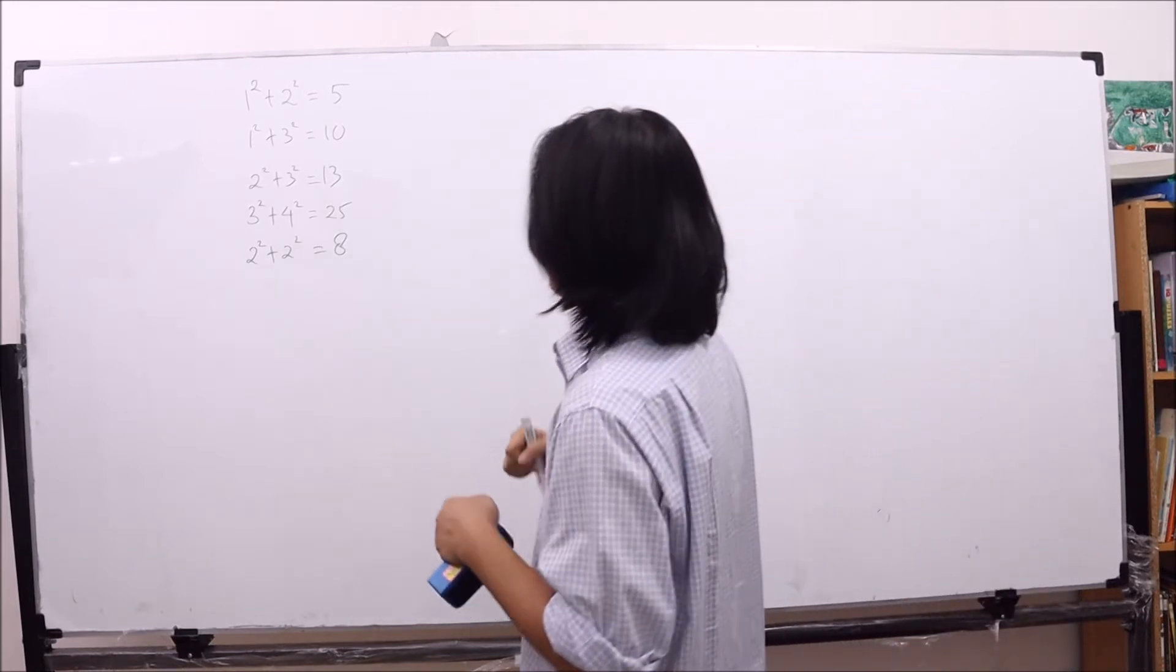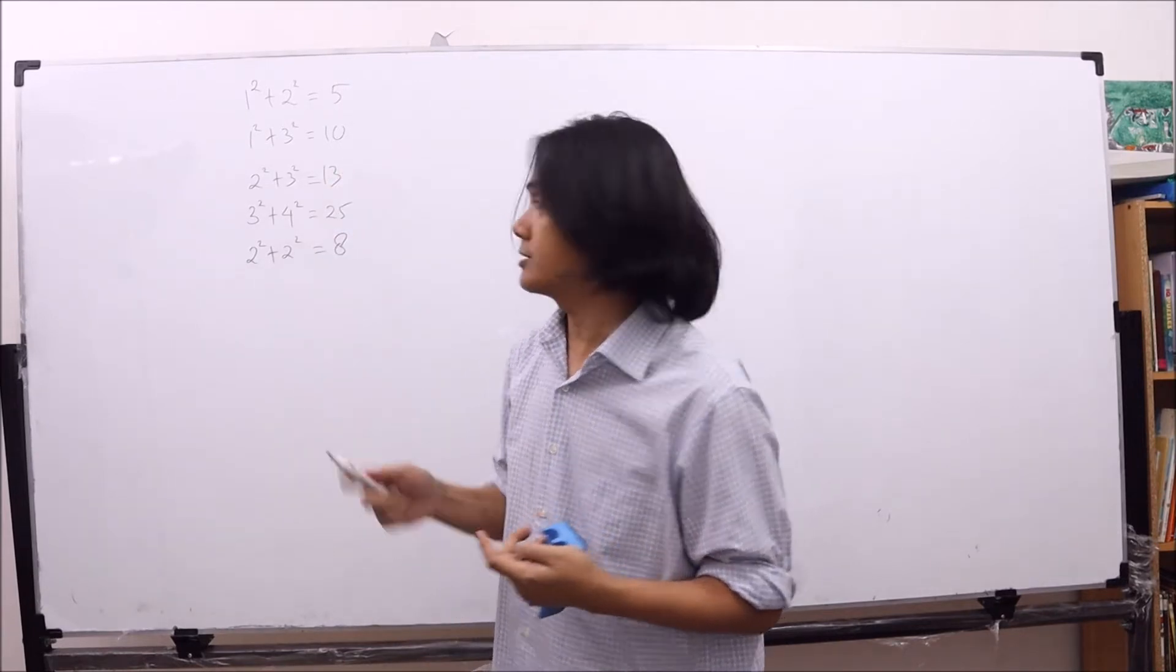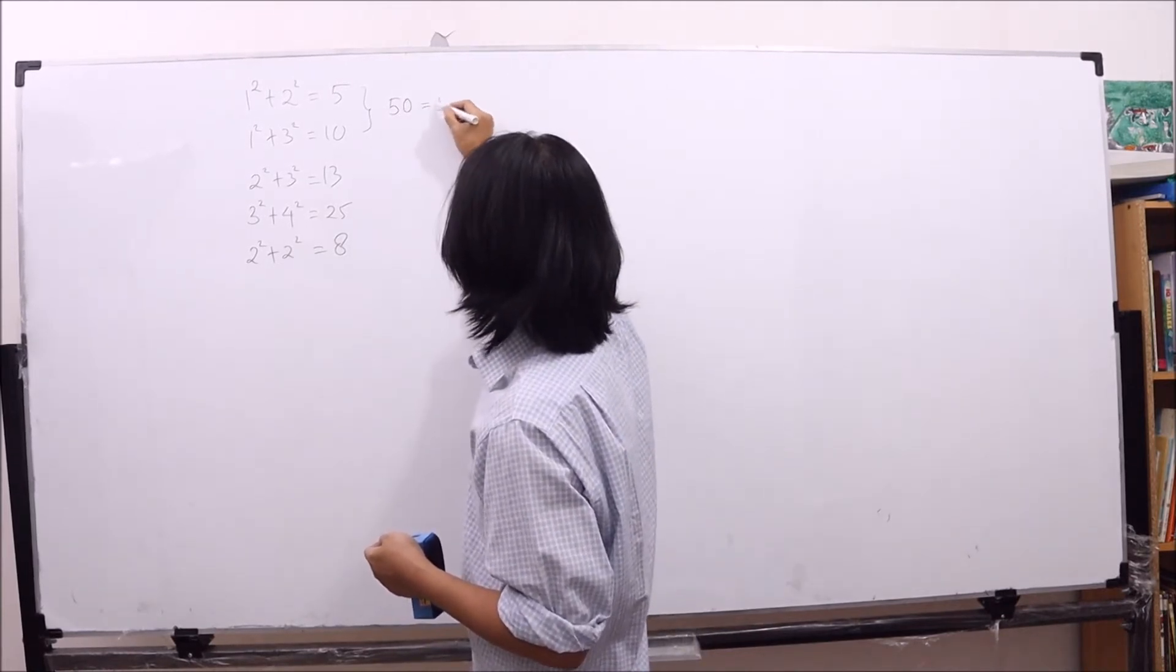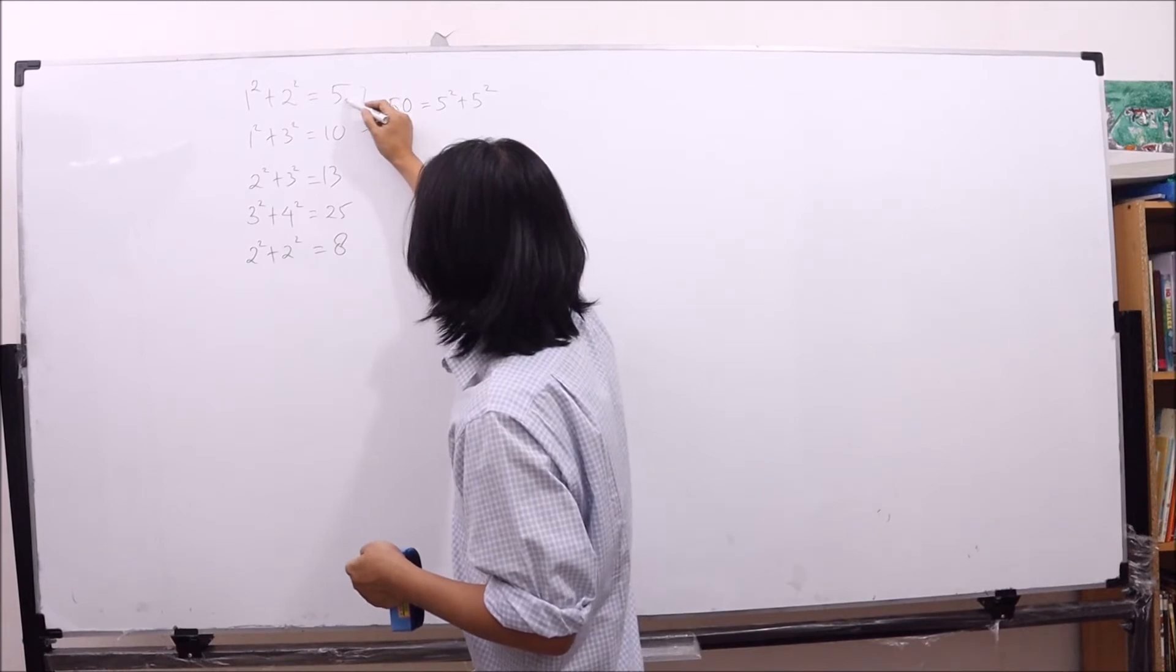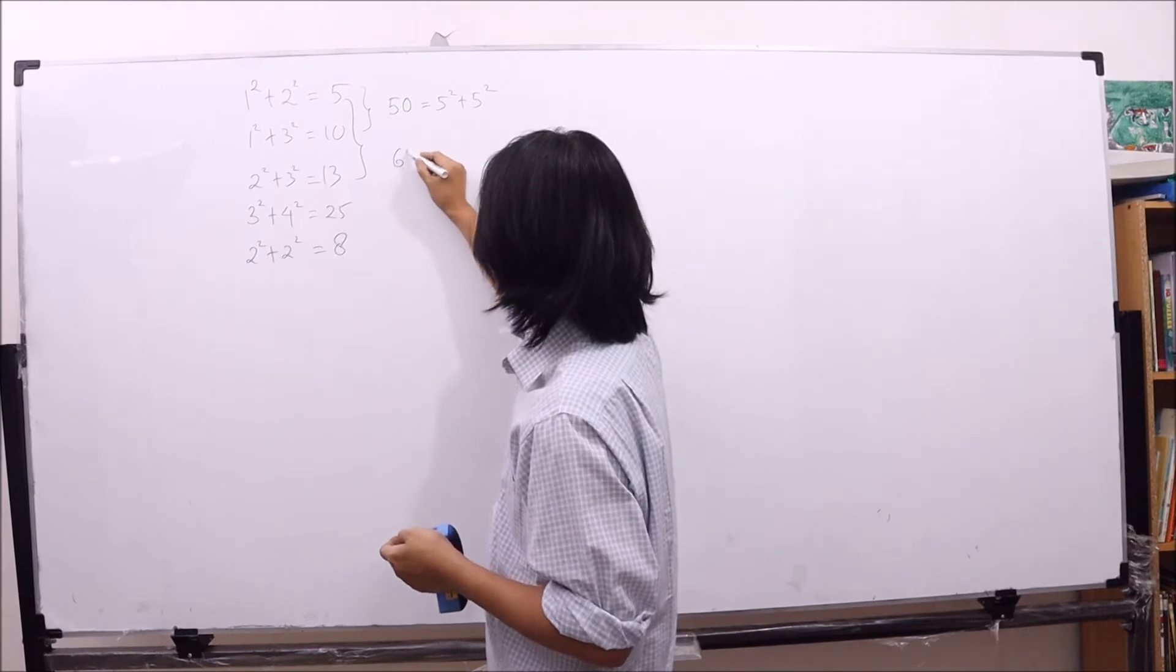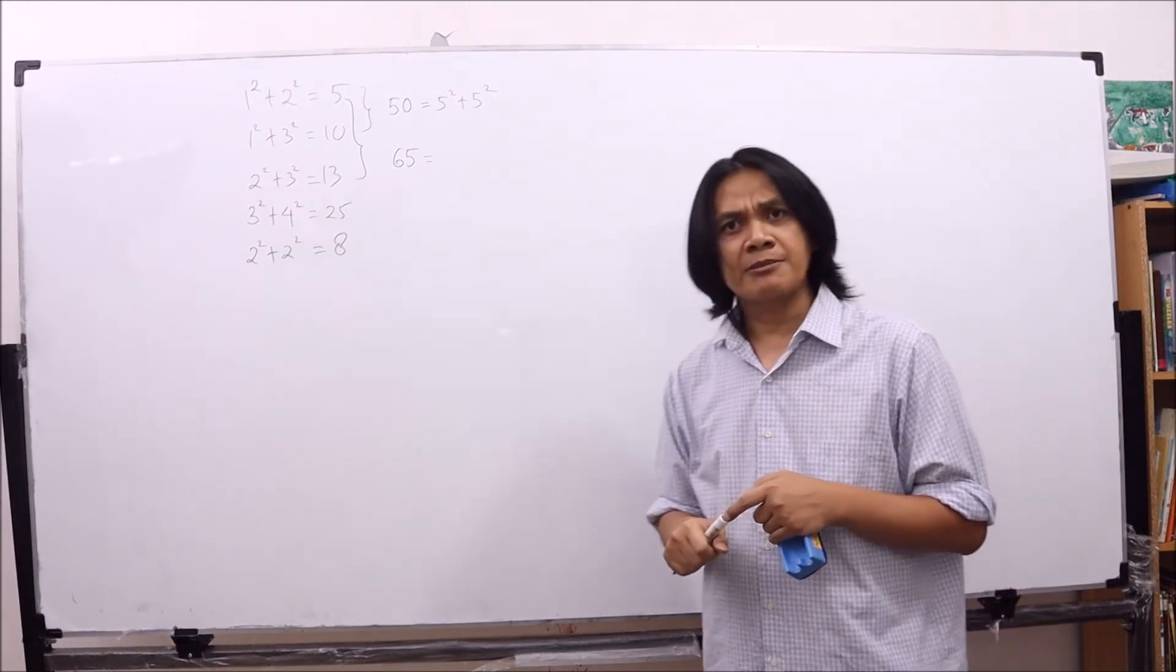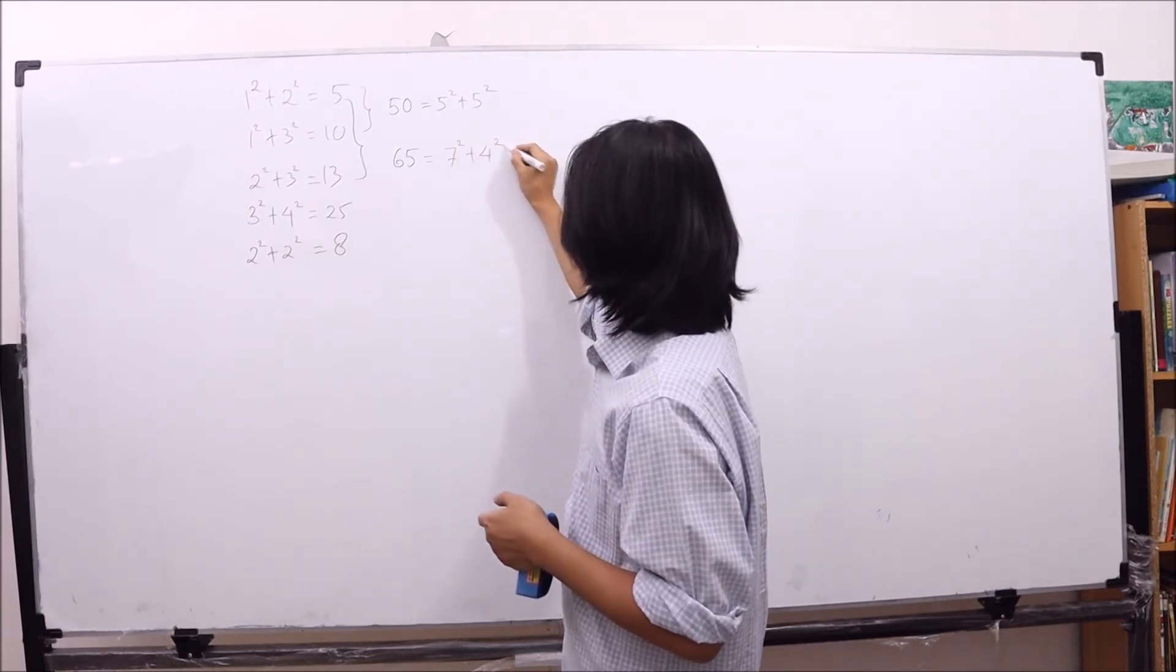So we are going to multiply numbers that can be expressed as a sum of two squares. Let's say 5 and 10. If we multiply 5 and 10, we have 50. But 50 is 5 squared plus 5 squared. How about 5 and 13? 5 times 13 is 65. Can we express 65 as the sum of two squares? 49 plus 16, I guess. 7 squared plus 4 squared. Great.